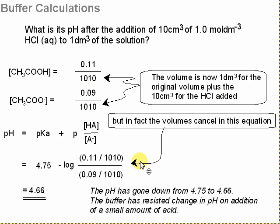The equation which we use for the pH is pH equals pKa plus p and then the ratio of these two concentrations. There's the pKa, p is minus log, there is the concentration of weak acid, and there's the concentration of the conjugate base. As you can see, those two volumes cancel out. When we work out this value, it goes to 4.66. So the pH has gone down from 4.75 to 4.66, but not very much. The buffer has resisted change in pH on addition of a small amount of acid.